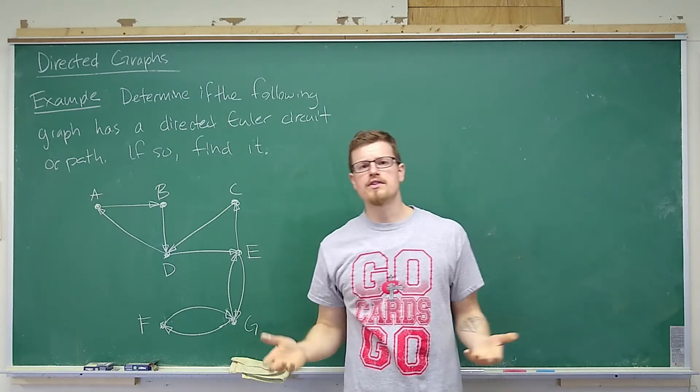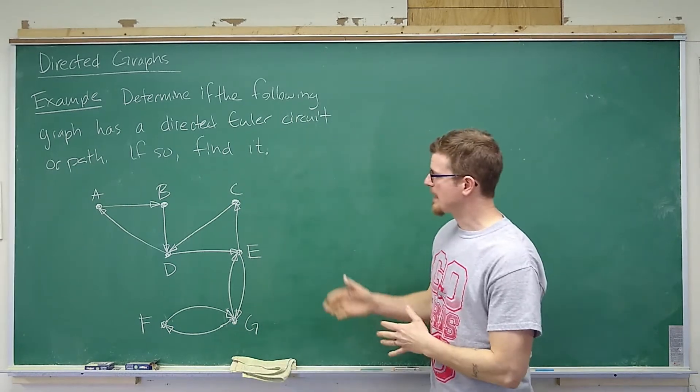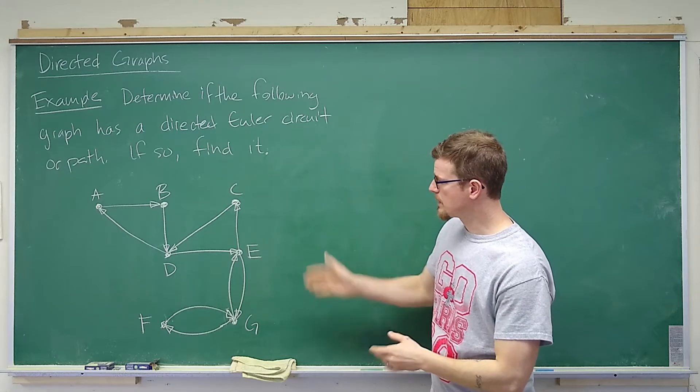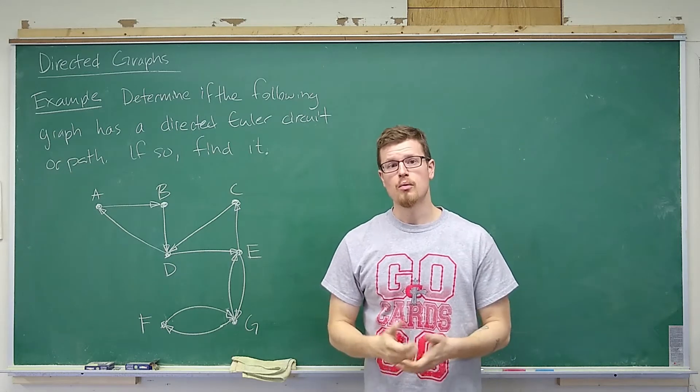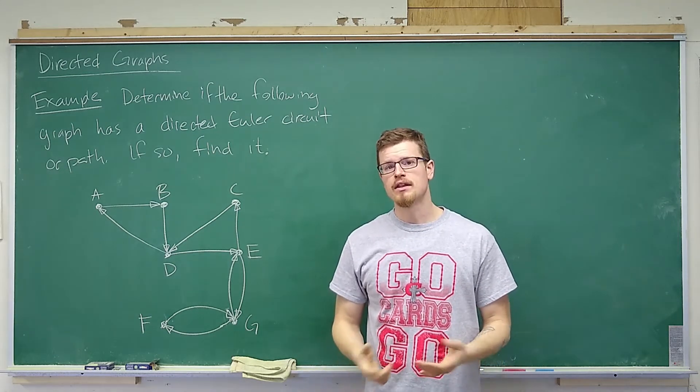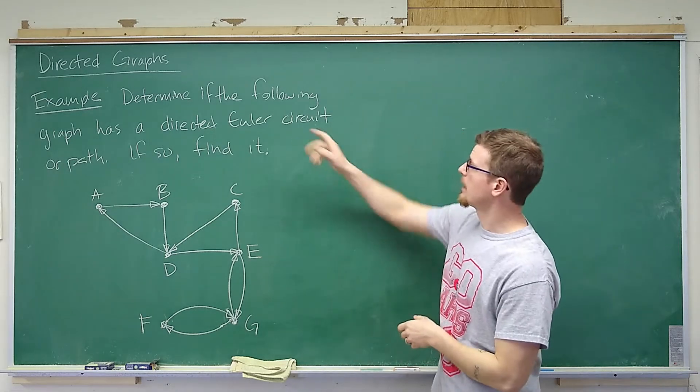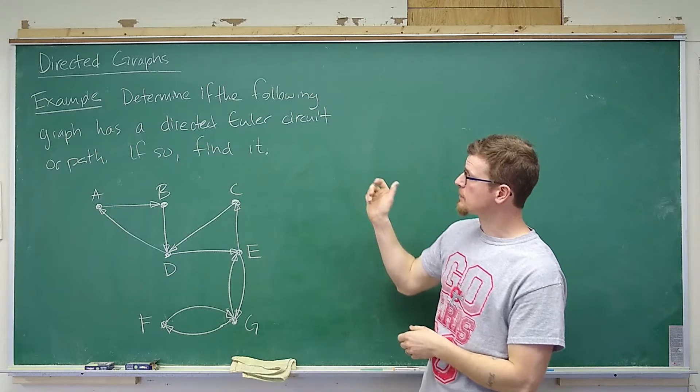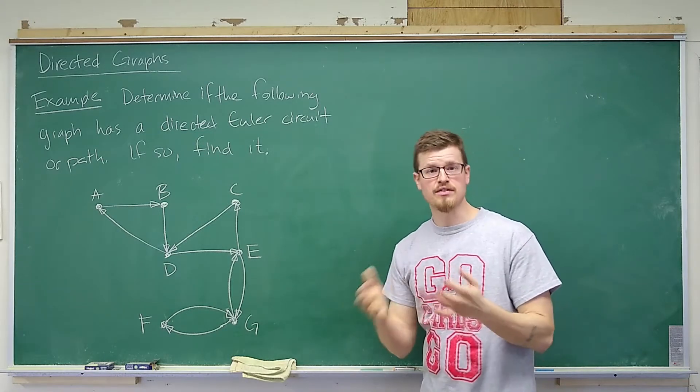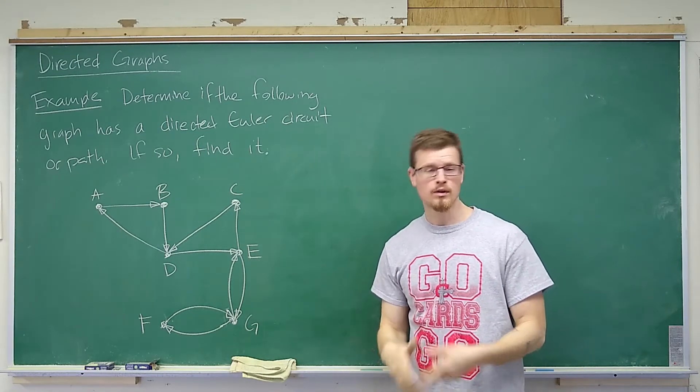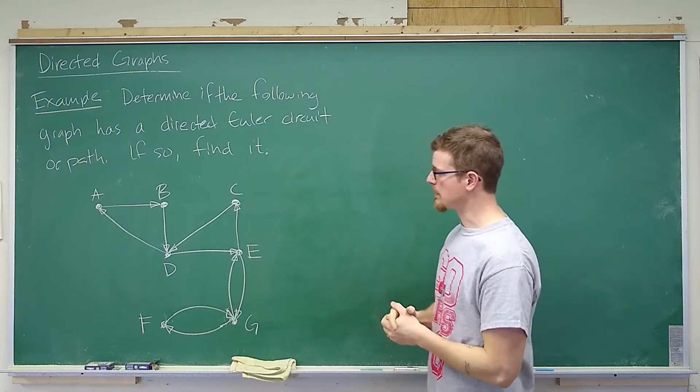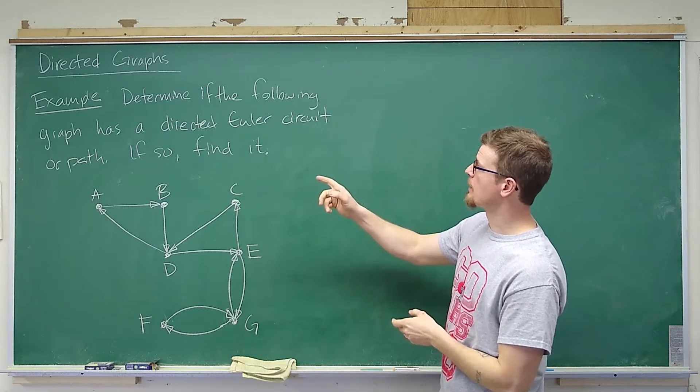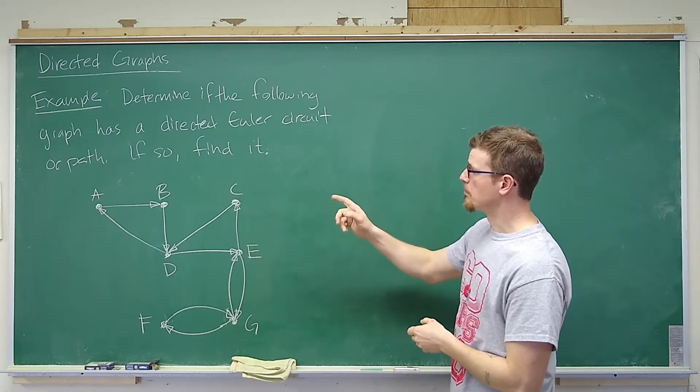Previously, if the degree of each vertex was even, then we would have an Euler circuit. And if the degree of every vertex was even except for two which would be odd, then there would be an Euler path.